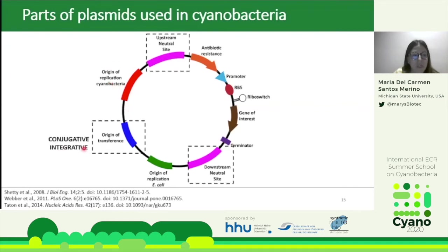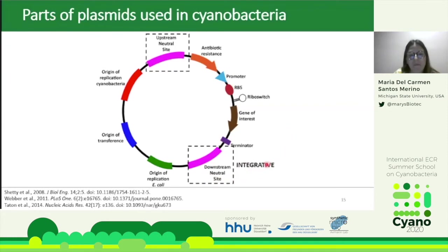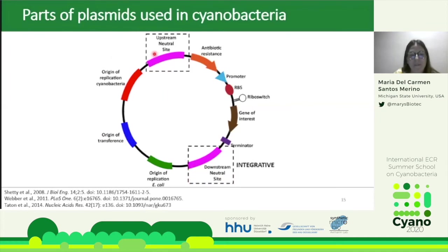The second type are conjugative and integrative plasmids, which have an origin of transfer from E. coli to cyanobacteria plus neutral site regions upstream and downstream to allow integration into the genome. The third type are integrative plasmids that are directly integrated into the chromosome, typically transformed by natural transformation. Between the integration regions, we can introduce antibiotic resistance for selection, promoters, ribosome binding sites, riboswitches, and terminators.